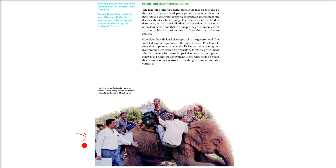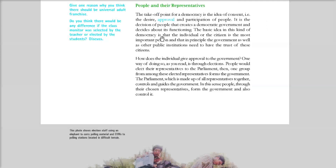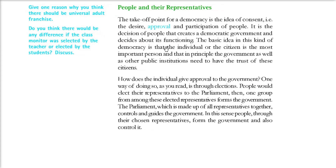You can see an election officer going to a very remote area for elections. These are the electronic voting machines he is carrying. So how do we take the consent of the people - that is the approval, desire, and participation of people?